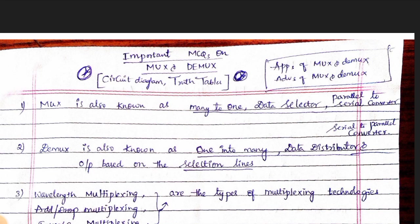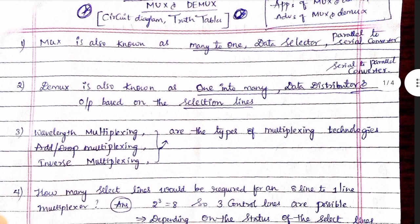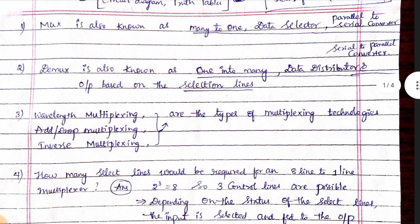If you need the circuit diagrams and truth tables, you will find a PDF available. The mux is also known as Data Distributor and Serial-to-Parallel Converter.